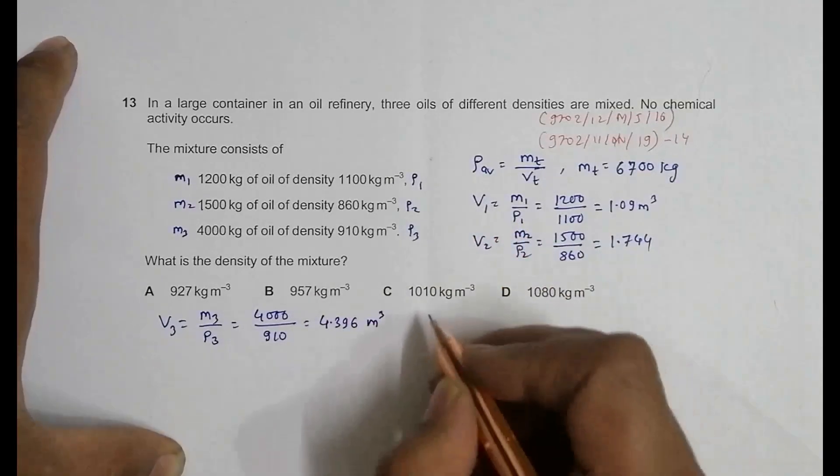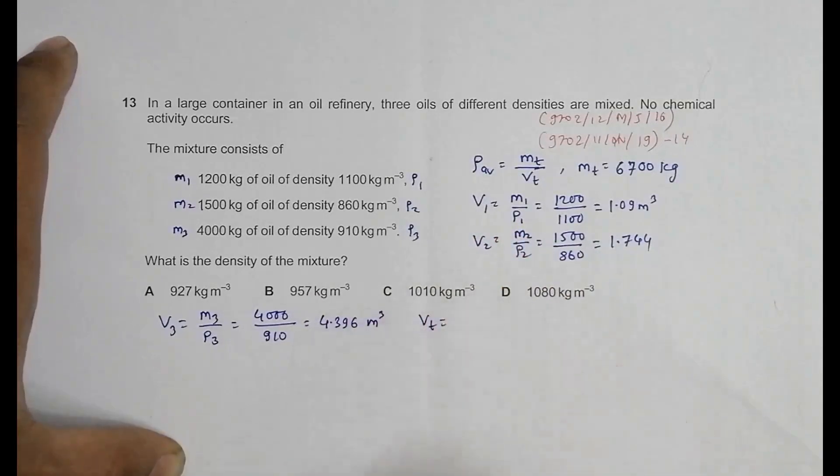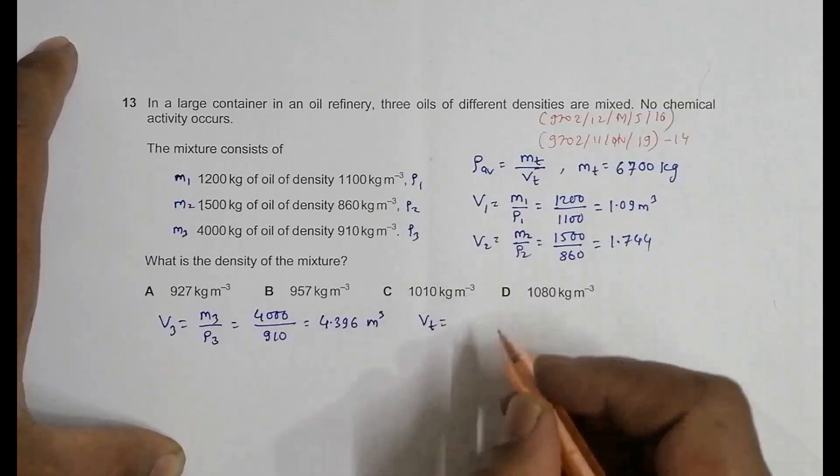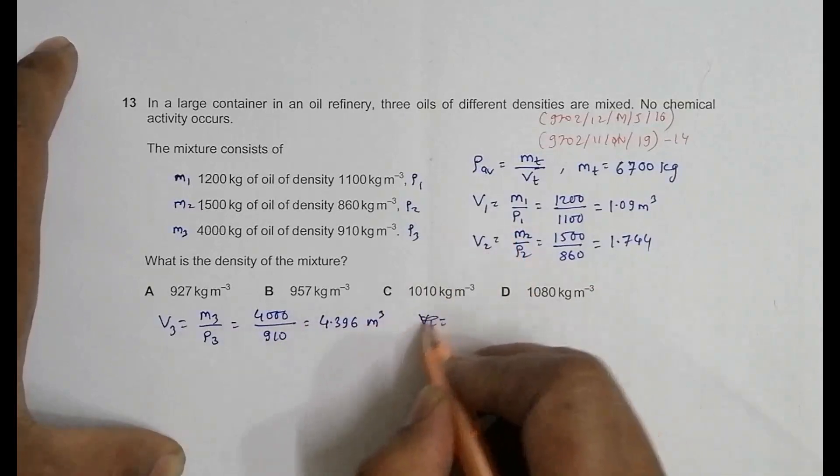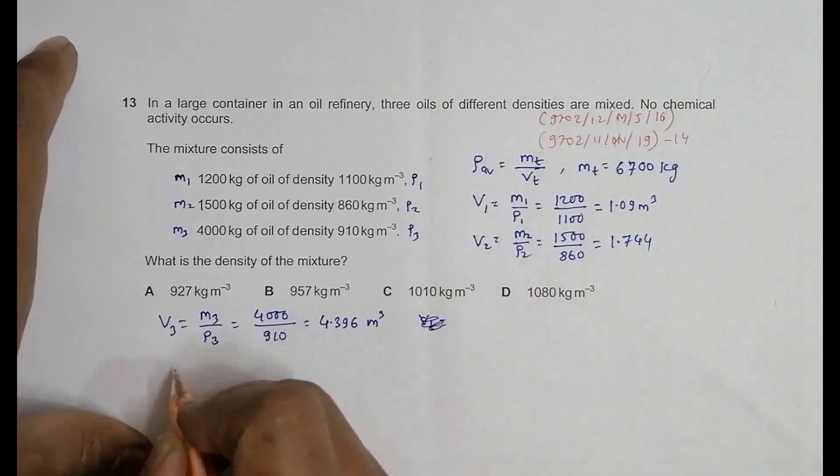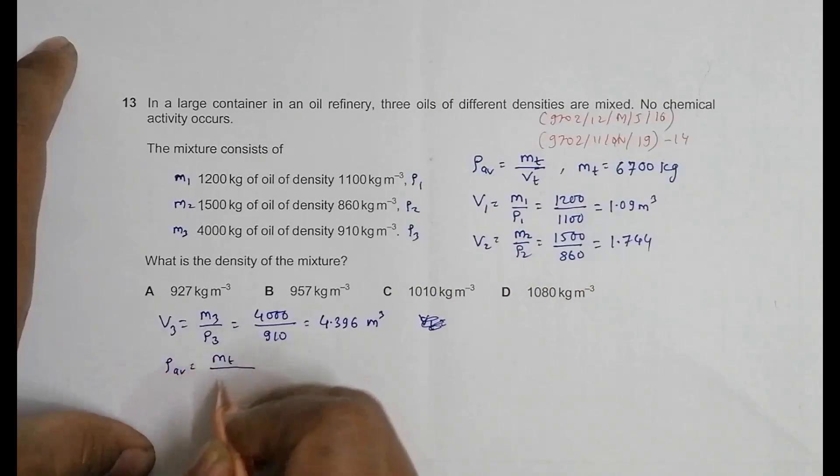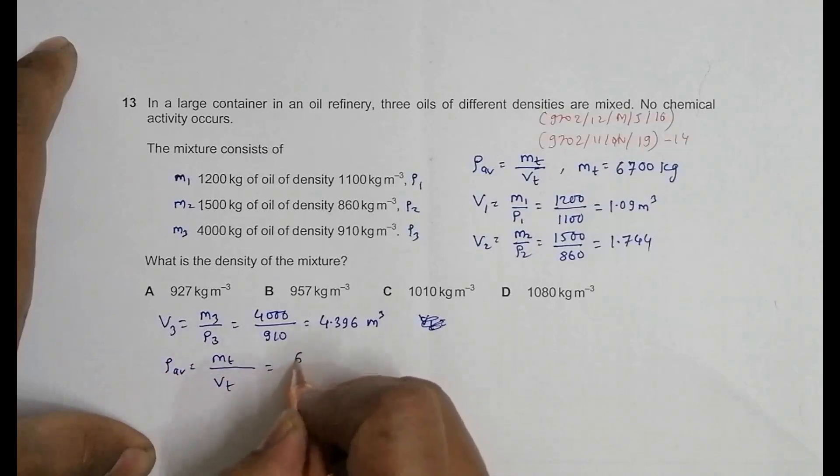V total will be equal to the sum of all these things. So the average ρ is equal to mass total by V total, that's equal to 6700 divided by V total, which is equal to the sum of all of these volumes.